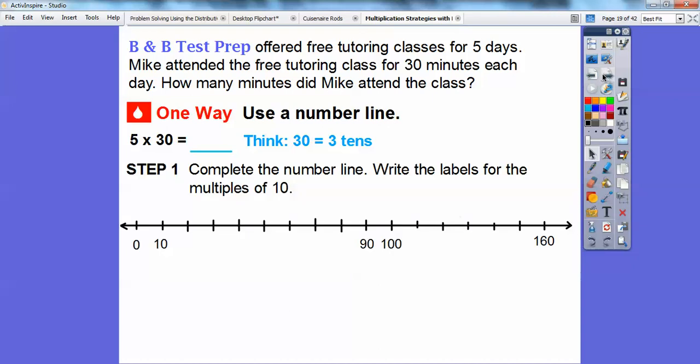And so here's the number line, and the number line's going by tens right here. So here's 0, 10, so this would be 20, 30, 40, 50, 60, 70, 80. Here's 90, here's 100.